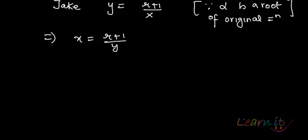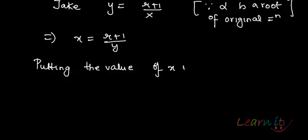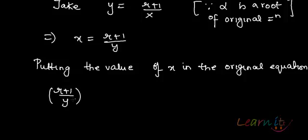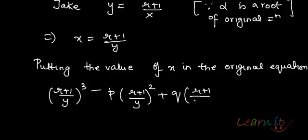Now putting the value of x in the original equation, what do we get? We will get (r+1/y)³ - p(r+1/y)² + q(r+1/y) - r = 0. So you see now there is no x term.